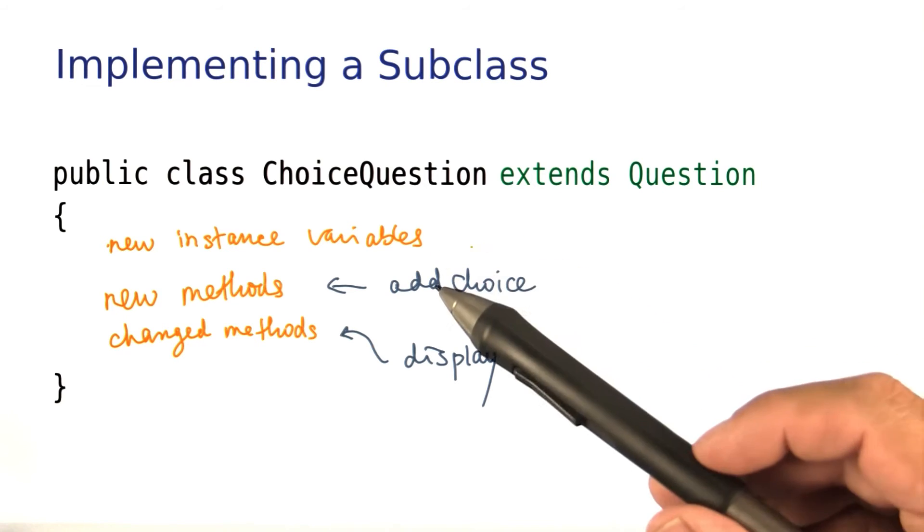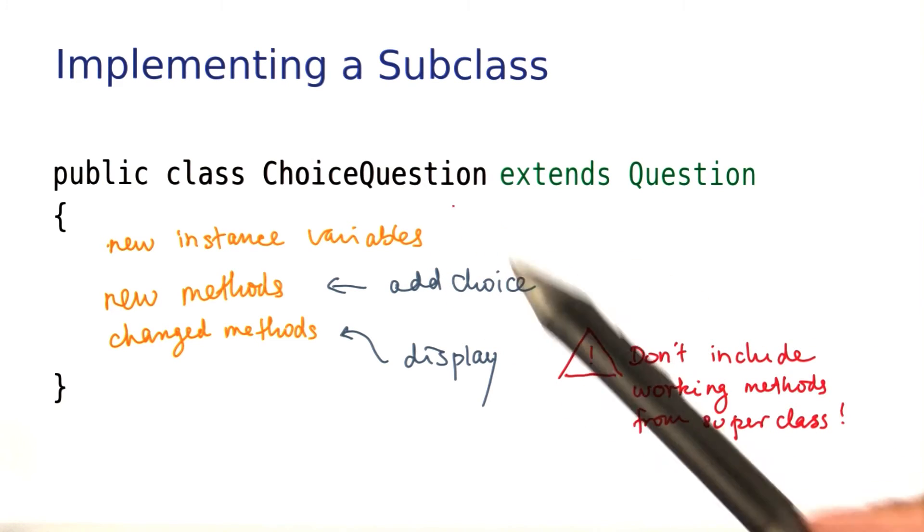The key point is what you don't put in here. When you define a subclass, you never include any of the methods from the superclass that work just fine. For example, the setText method will work fine, and we can simply inherit it from the superclass. Also, you don't want to include any fields from the superclass. You get those automatically, and if you were to include them again, you'd get them twice, which is not good.